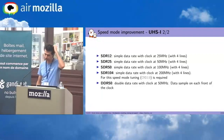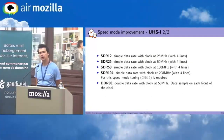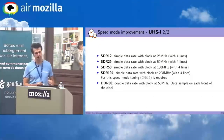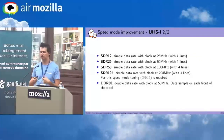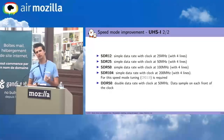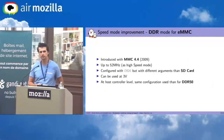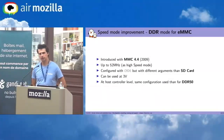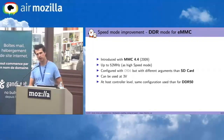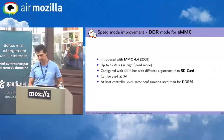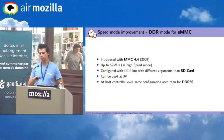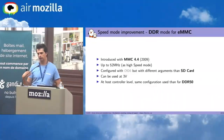For SDR104, tuning is required to ensure you don't miss the clock, as the frequency gets high. There is a dedicated command for this — CMD19. At the same time, eMMC version 4.4 introduced DDR mode: instead of running at 26 MHz with single rate, DDR uses both edges of the clock to double the bandwidth. From the host controller point of view, this is equivalent to DDR50 for SD card. Most controllers handle both SD card and eMMC with only minor differences.